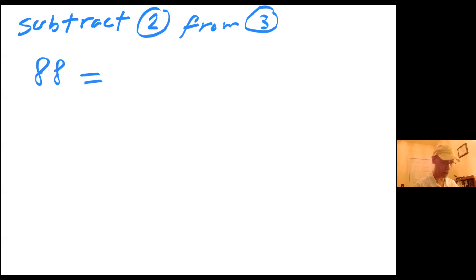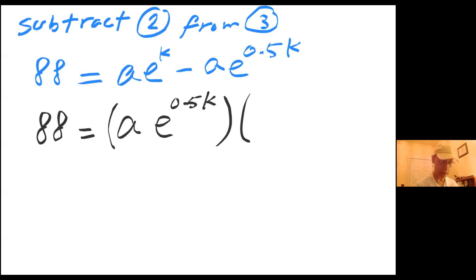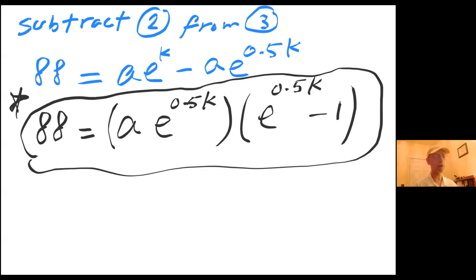So I have 88 equals A times e^k minus A times e^(0.5k). And notice that I can factor the right hand side. So I can rewrite this as 88 equals A times e^(0.5k) times (e^(0.5k) minus 1). And I'm going to go ahead and name this equation, give it the name star, because I'm going to save this to use it.